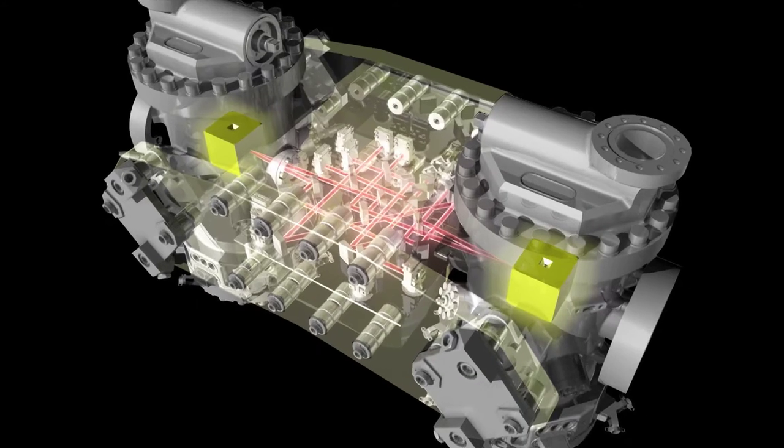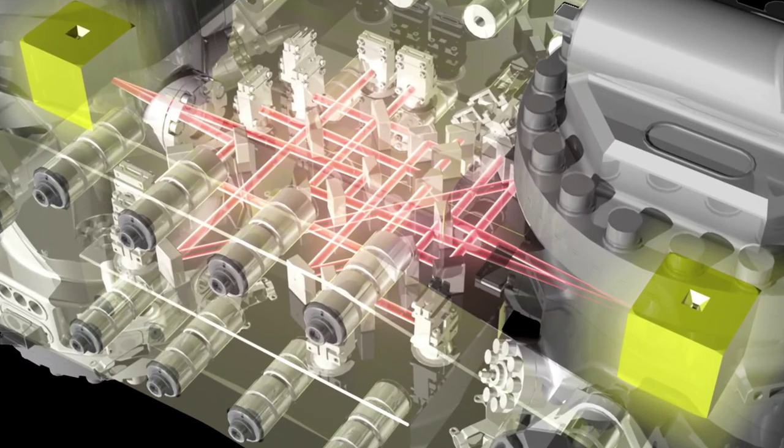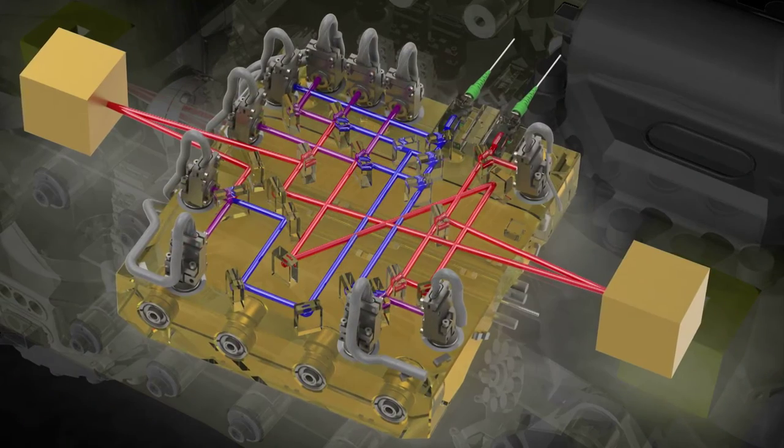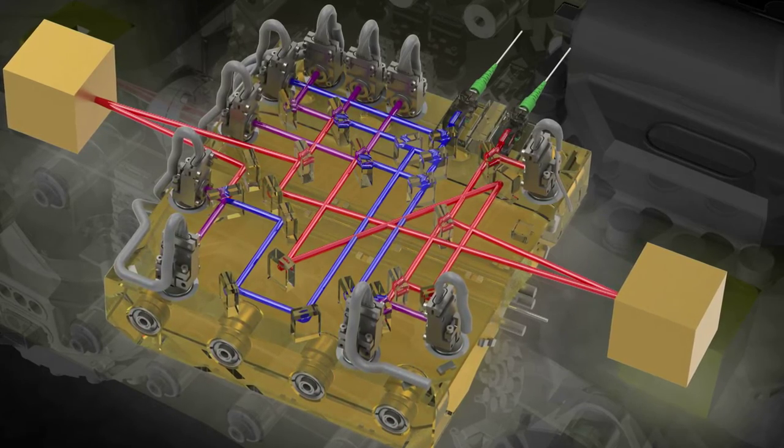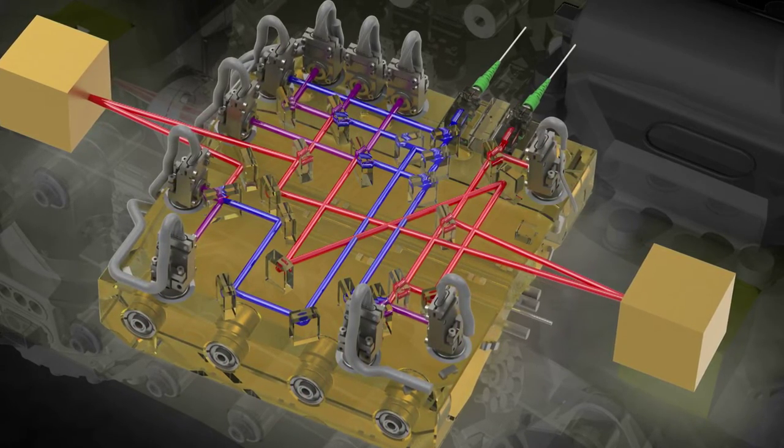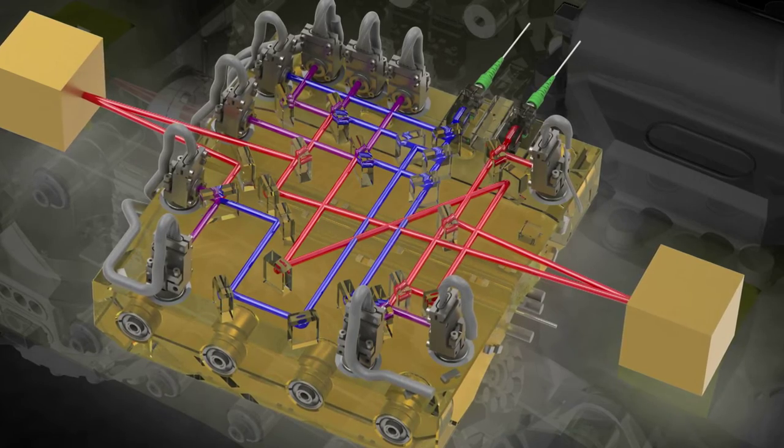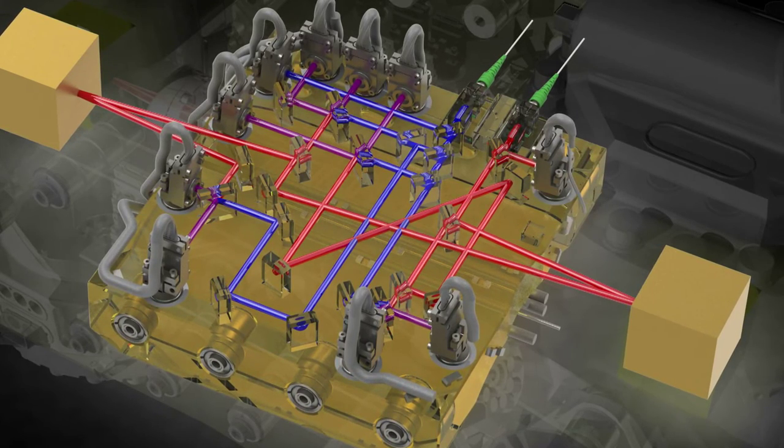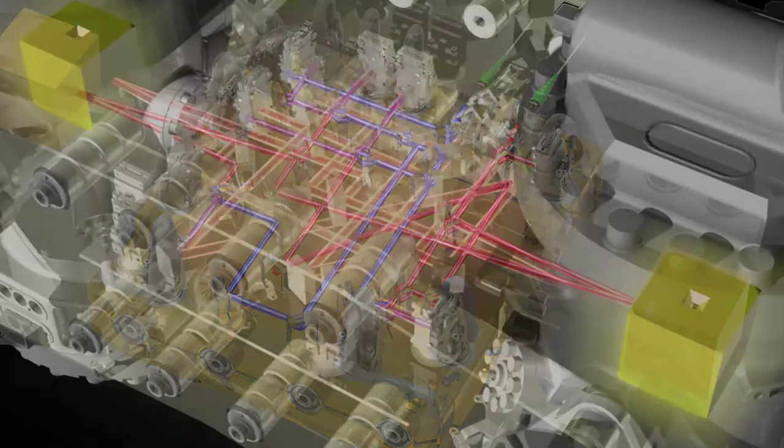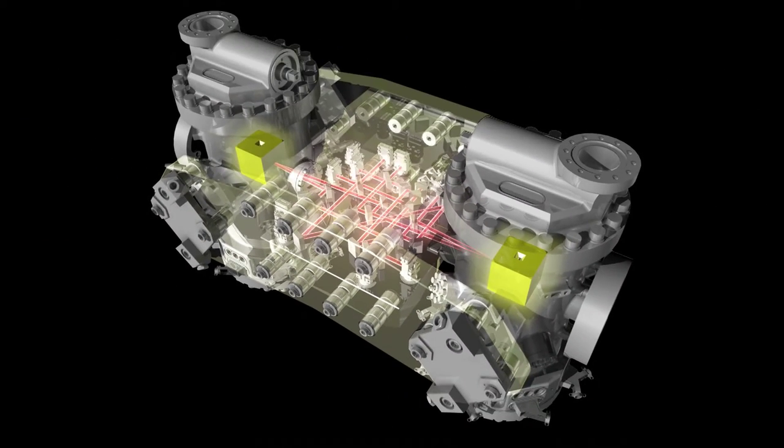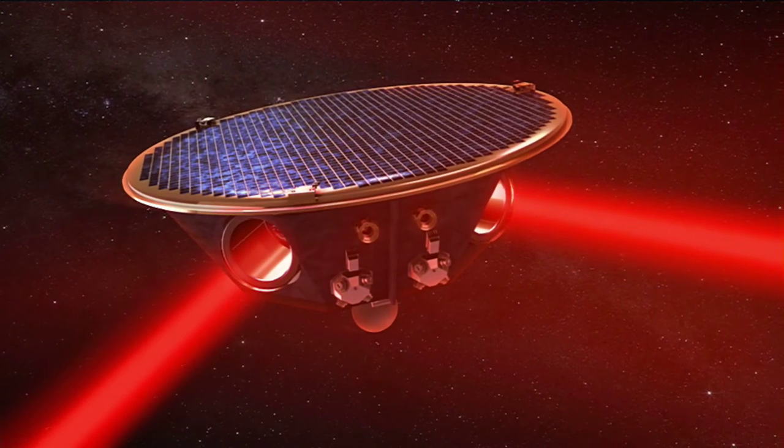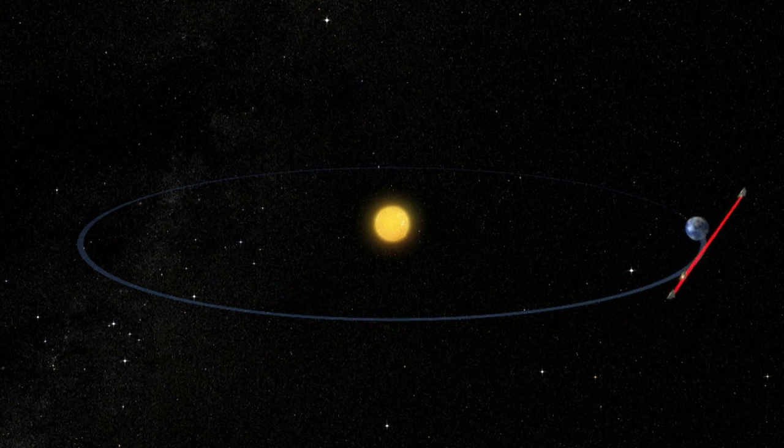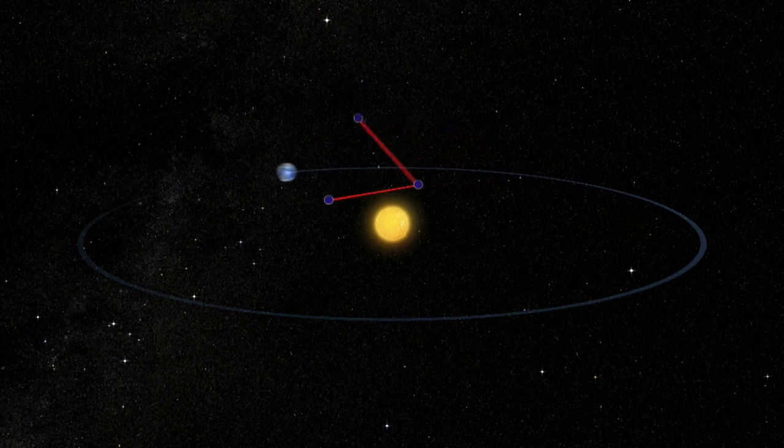The optical bench is the heart of the LISA Pathfinder spacecraft and the actual experiment. Its optical components, mirrors and splitters made of glass, are able to distribute and direct the light from two lasers, so that there are actually four complete interferometers at work on the optical bench. This system continually measures the distance between two test masses, which are at absolute rest. This is how it is possible to test a laser interferometer, which will later span millions of kilometers between three spacecrafts.